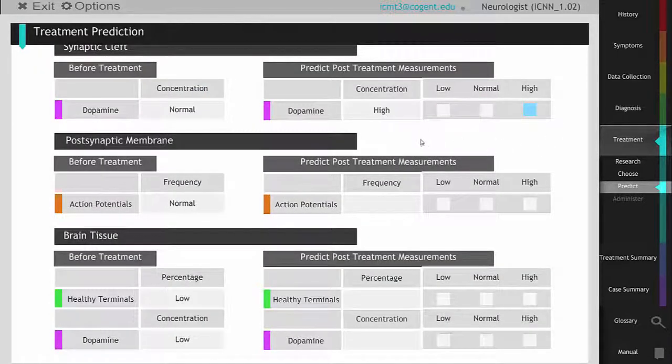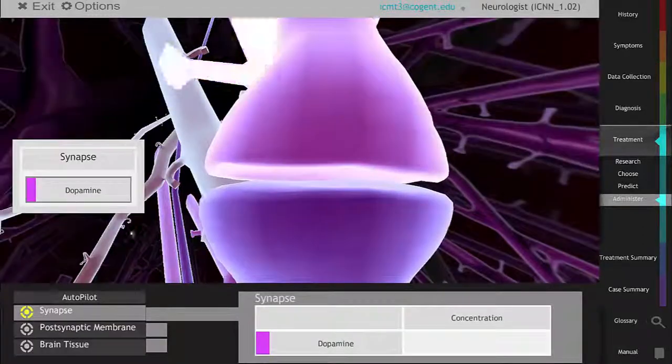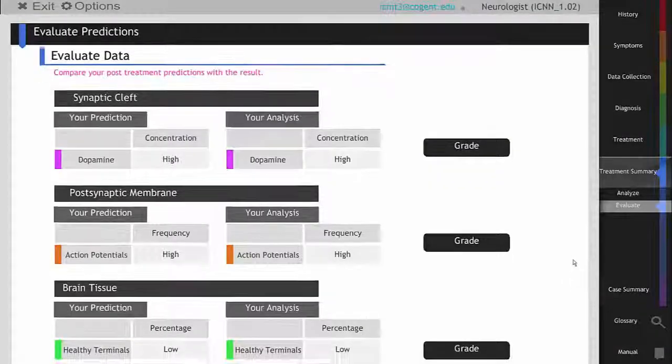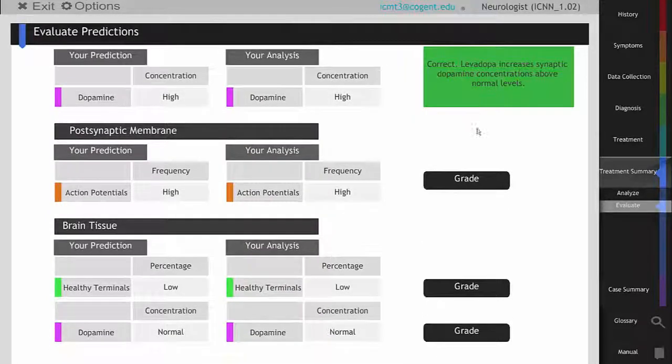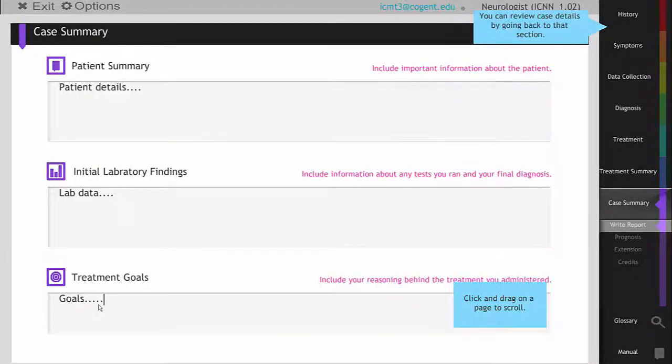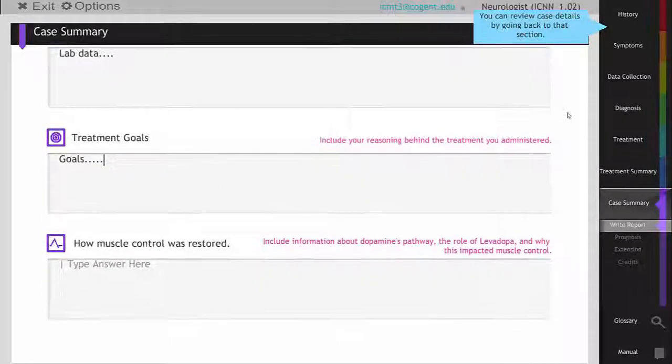After students predict their treatment's effect upon dopamine signaling, they perform the treatment and evaluate the results. They then complete a case report to discuss the diagnosis and treatment of their patient.